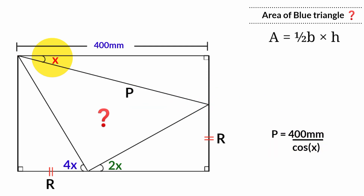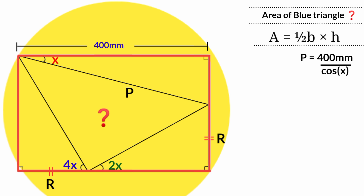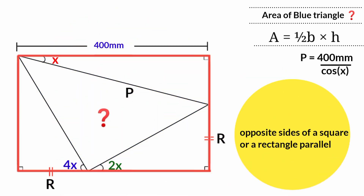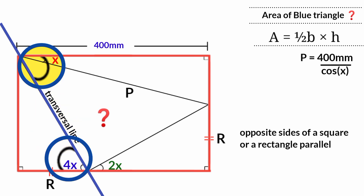But what is the size of angle X? We have to calculate it. This shape is either a square or a rectangle, and one of their common properties is that opposite sides are parallel. This line here is a transversal intersecting both parallel sides, and a transversal between two parallel lines forms alternate angles which are equal. So this angle and this angle are equal — this is also 4X. Since the whole angle is 4X and we have this part as X, the remaining part is 4X minus X, which is 3X.